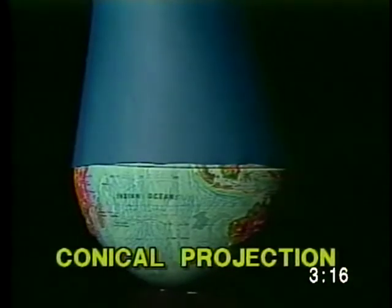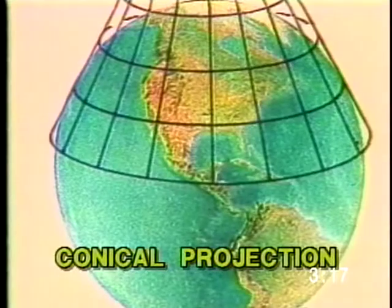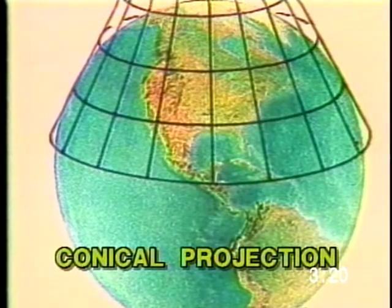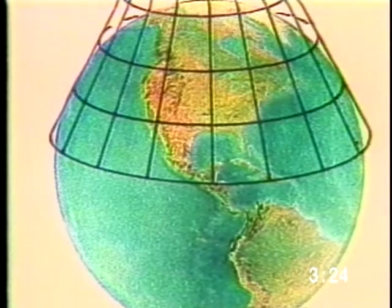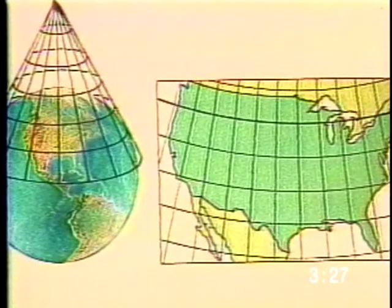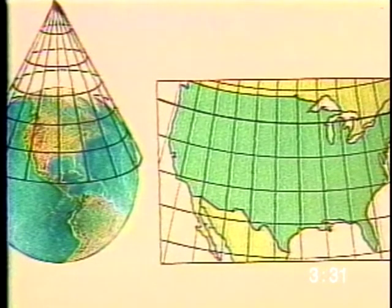The third type of projection is called a conical projection. This type of map is made with a cone of paper. Where the base of the cone touches the globe, as with the other two types of projections, there is little distortion. These types of maps are often used to show areas in the middle latitudes.